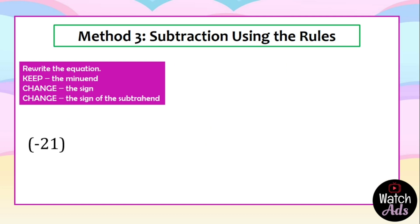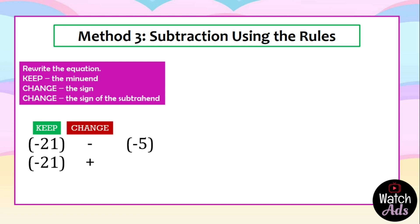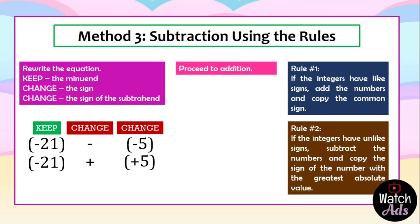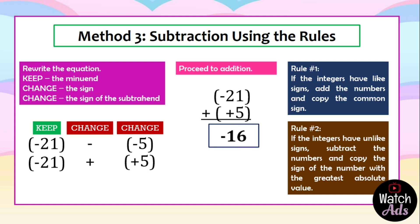Another example: negative 21 minus negative 5. First, we keep negative 21. We change minus into plus. And we change negative 5 into positive 5. Then we proceed to addition: negative 21 plus 5. These are unlike signs, so we subtract. 21 minus 5 is equal to 16. Which is greater — 21 or 5? Of course, 21. The sign of 21 is negative. The final answer is negative 16.